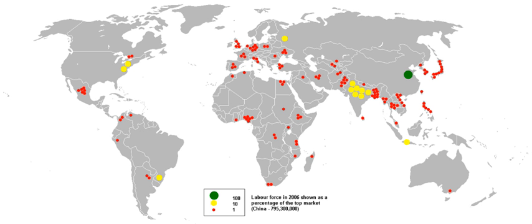The ten federations were INTUC, CITU, BMS, AITUC, HMS, NLO, UTUC, AIUTUC, NFITU and TUCC. Each federation had numerous local trade union affiliates, with the smallest TUCC with 65 and INTUC with 1,604 affiliated unions. By 1989, BMS had become India's largest federation of unions with 3,117 affiliated unions, while INTUC remained the largest federation by combined number of members at 2.2 million.